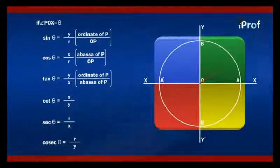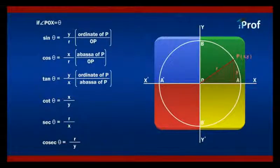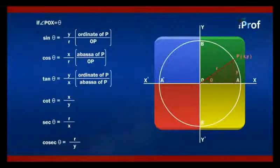We have P is here. The coordinates are x, y. Theta lies in the first quadrant. Sin theta will be equal to y upon r.